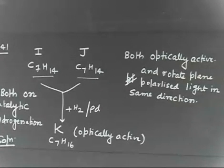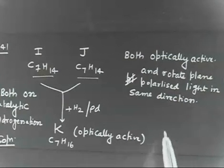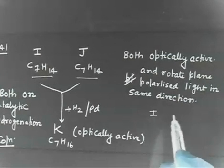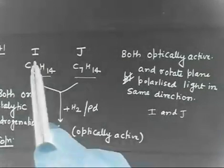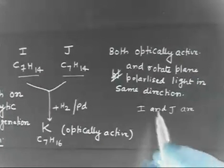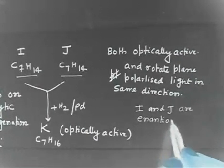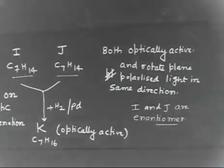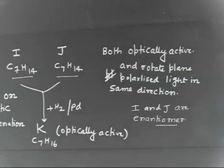So this means one thing is clear: I and J are not enantiomers. If they were enantiomers, they must have opposite rotation. So if they rotate in the same direction, I am 100% sure I and J are not enantiomers. If they were enantiomers, they would have to have opposite rotation.